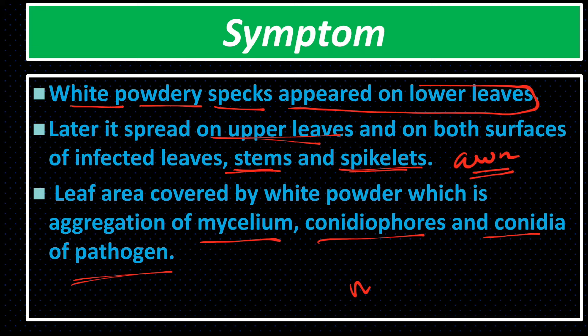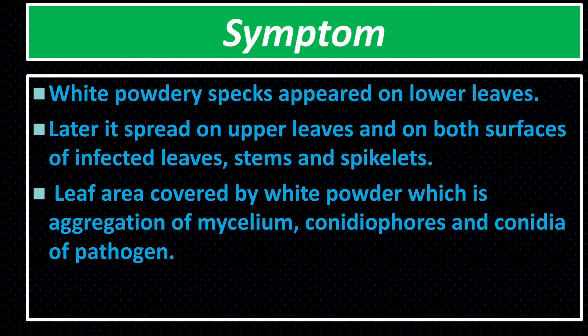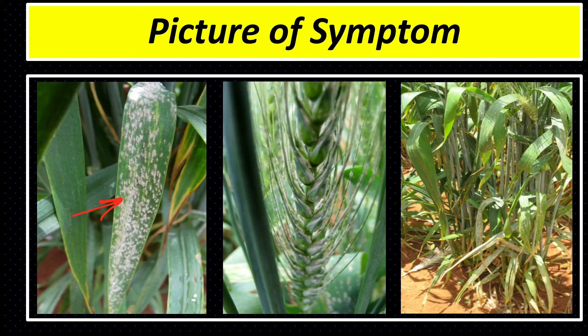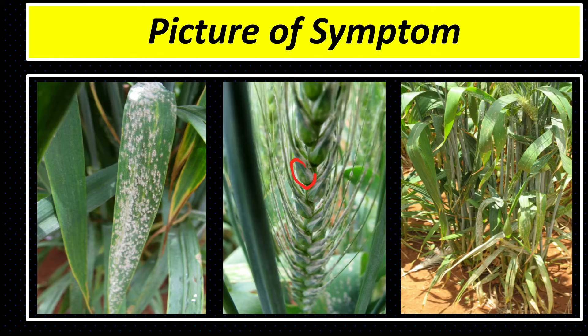In infected plants, grain size is reduced and yield decreases. Initially white-colored specks form on the upper surface, then lower surface; they coalesce and cover the entire leaf area. Tissues undergo necrosis and leaves fall prematurely. Similar powdery specks appear on awns, spikelets, and stems. In severe infection, grain size and yield are reduced.